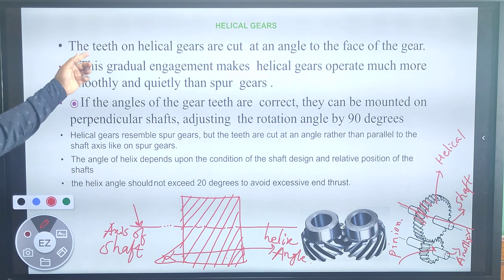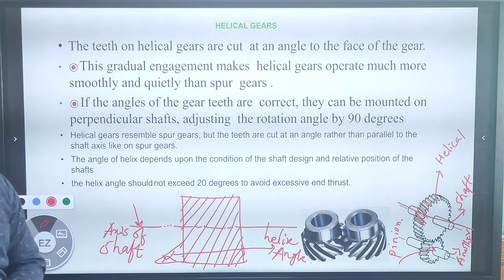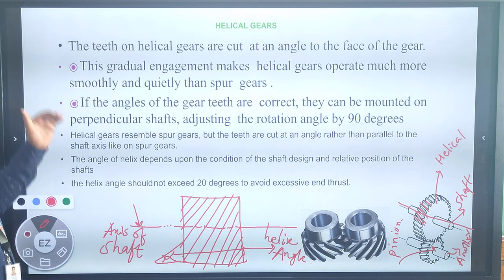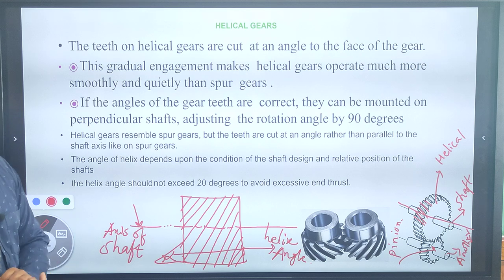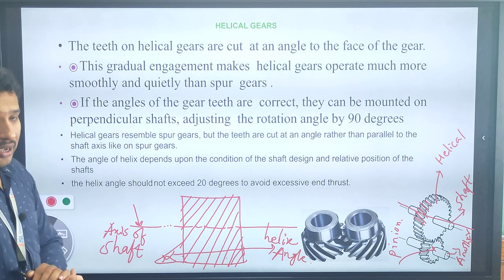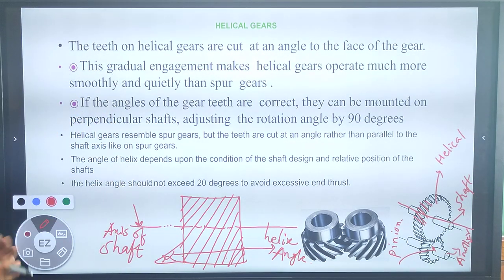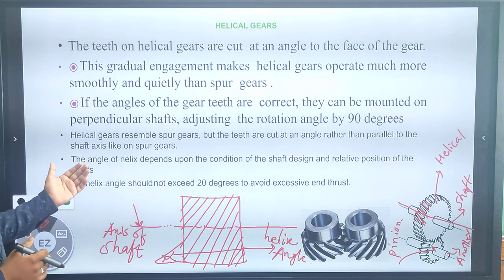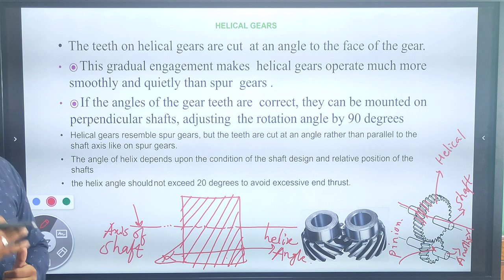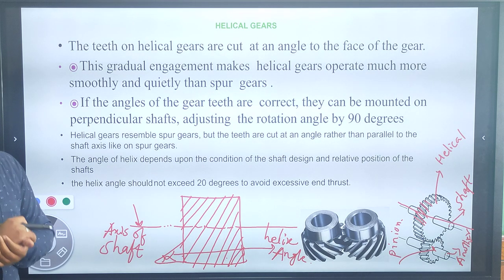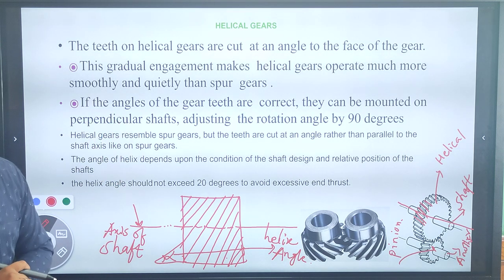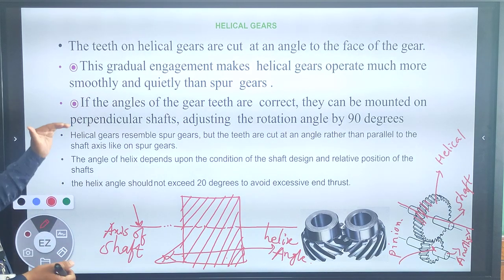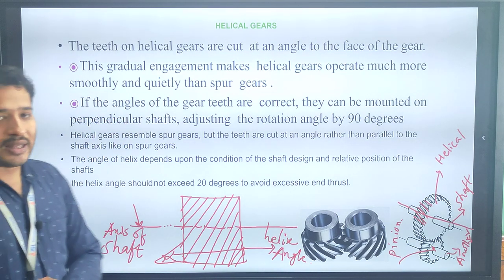The teeth on the helical gear are cut at an angle, meaning the teeth make some angle with the axis of the shaft. The gradual engagement makes helical gears operate much more smoothly and quietly than spur gears. Helical gears are mainly used for carrying heavier loads and can operate more easily compared to spur gear.